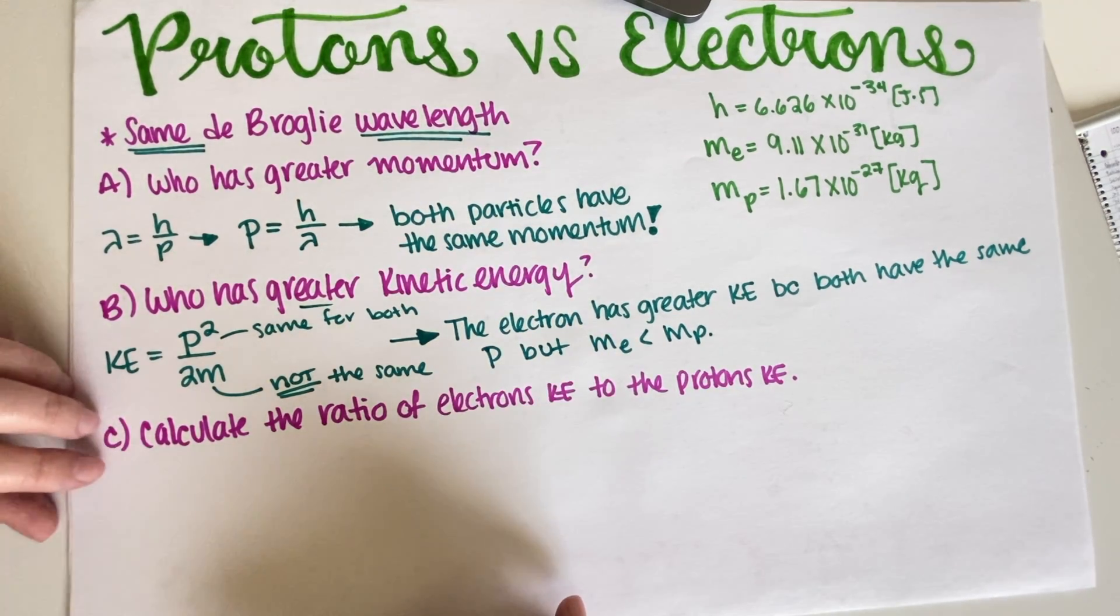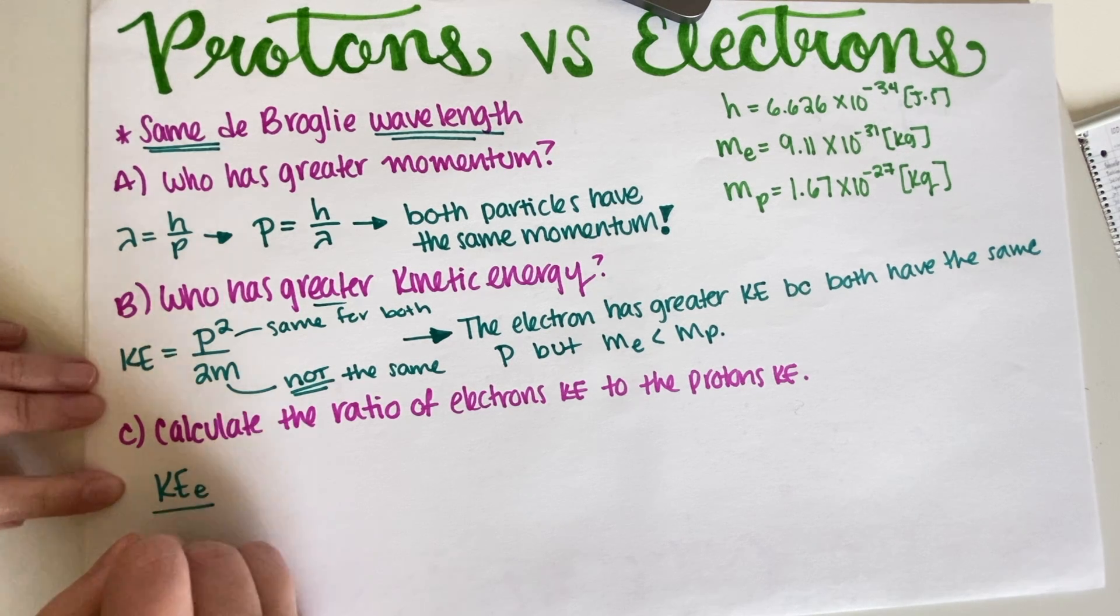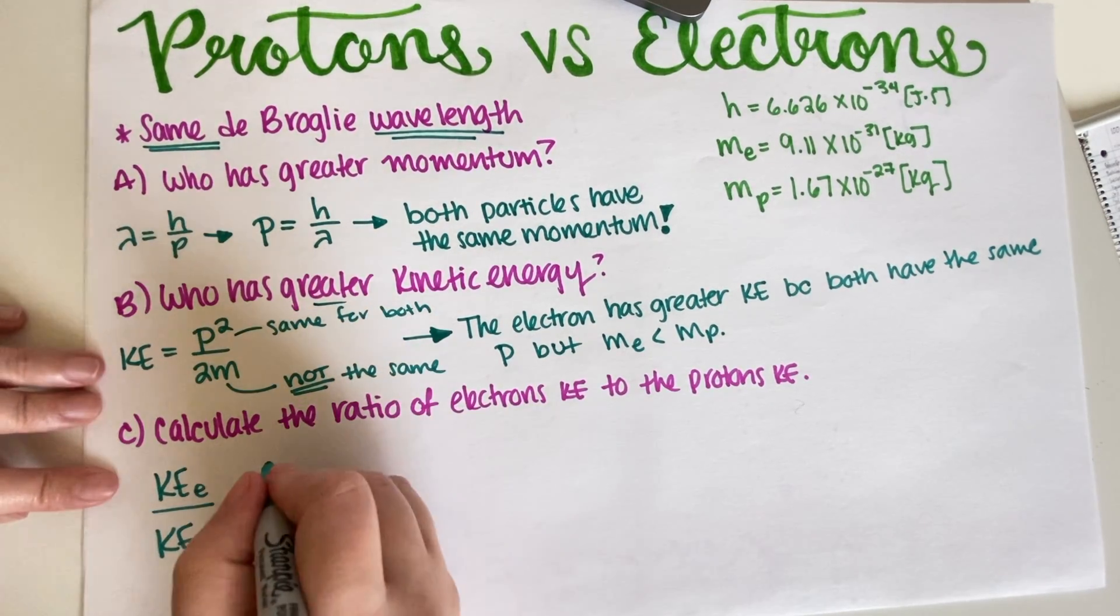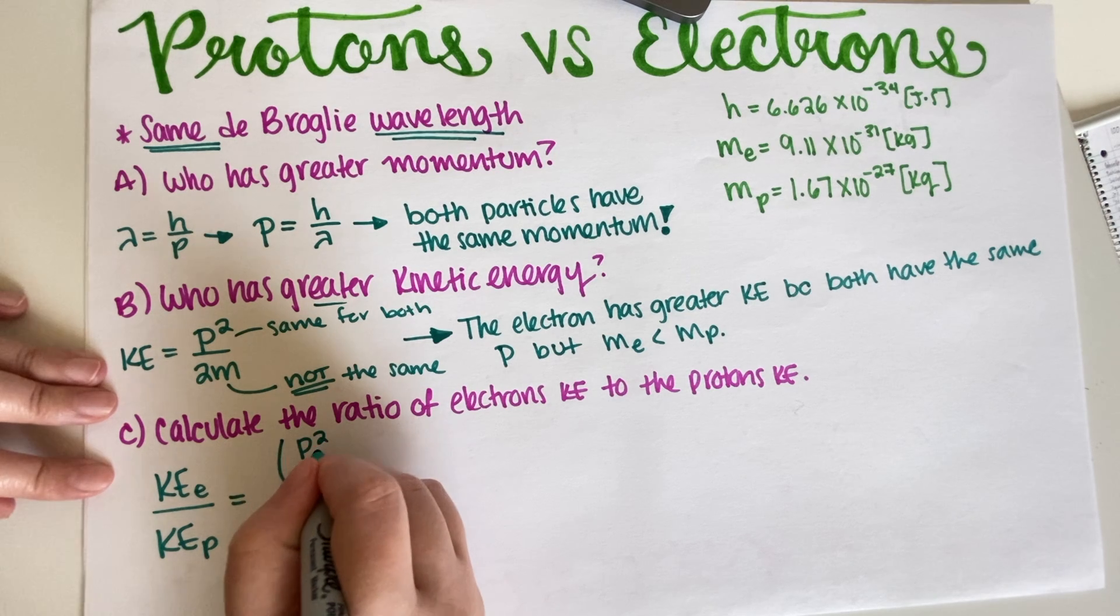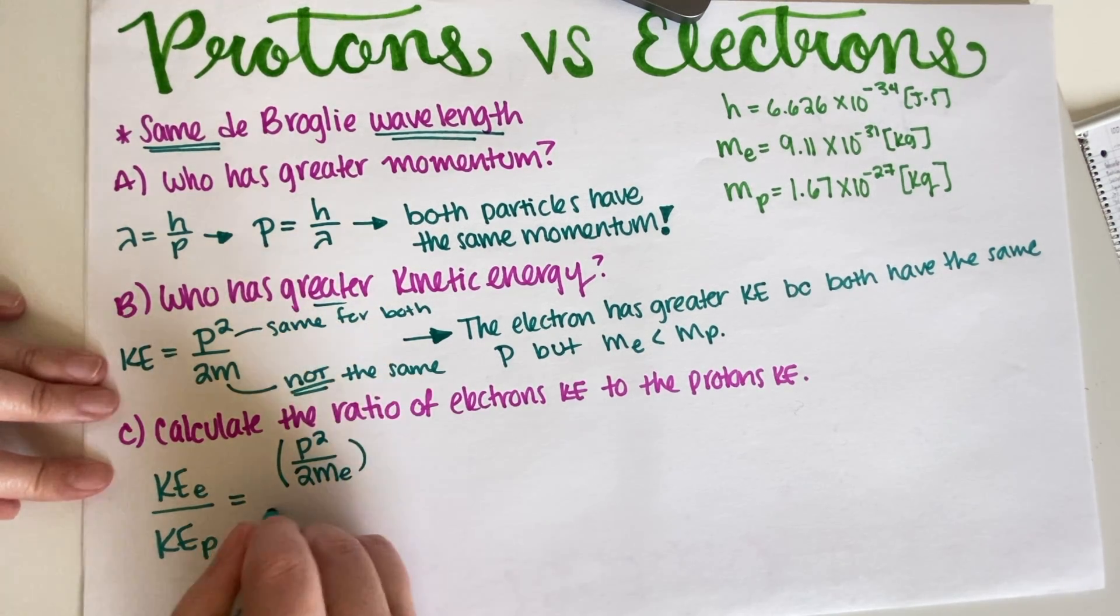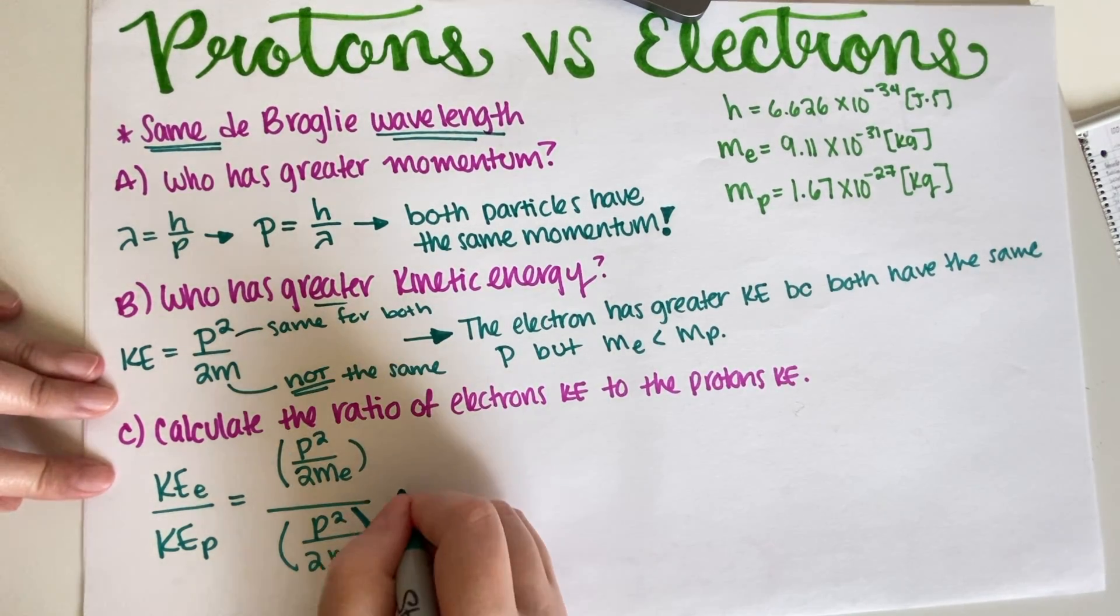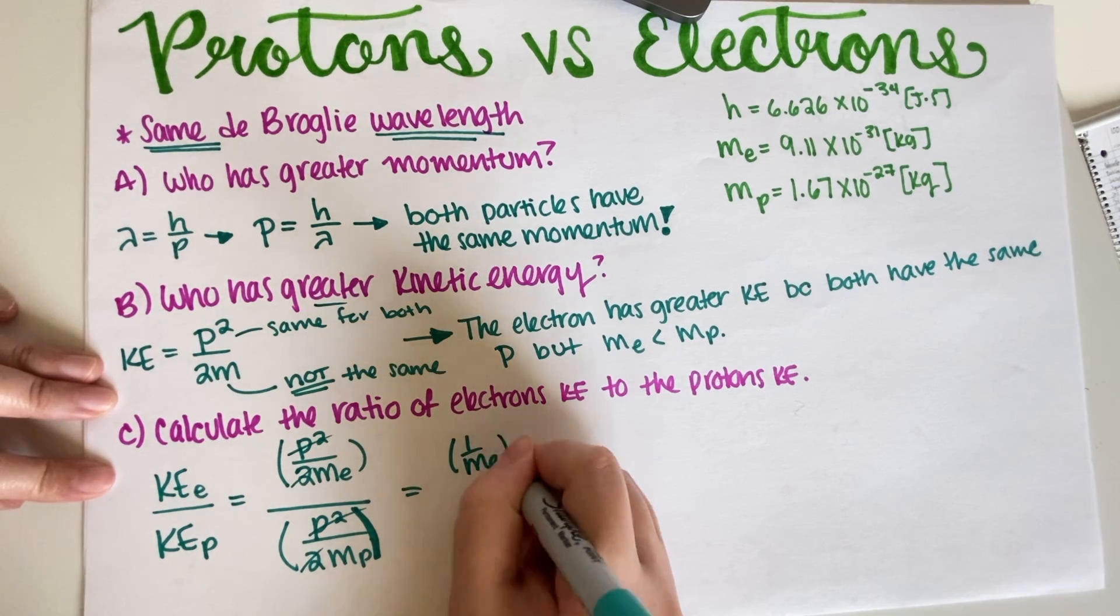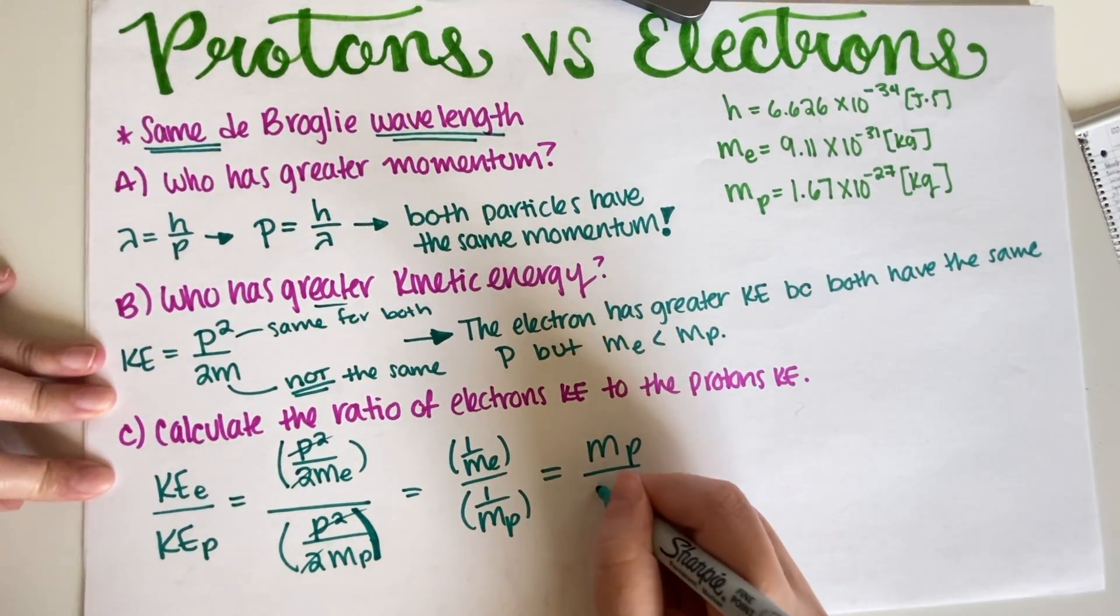So now for part 3, what they want is a ratio. They want kinetic energy of an electron divided by kinetic energy of a proton. So we basically just have to go ahead and do our equations. These cancel out and then these two cancel out, so basically I have one over... so they get flipped essentially. So this is mass proton over mass electron.